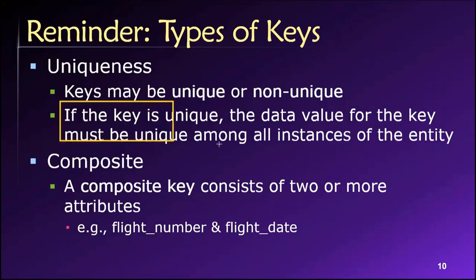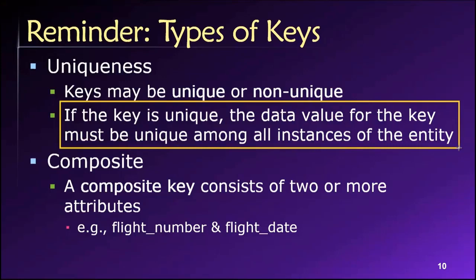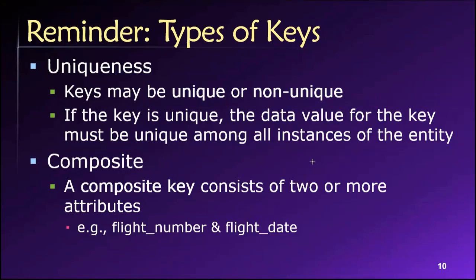So we know that uniqueness means if a key attribute is marked as unique, then the data value for that attribute must be unique among all rows in the table or in the language of entity relationship modeling among all instances of the entity. No two instances can have the same data value for a unique key.